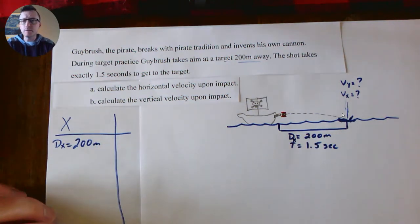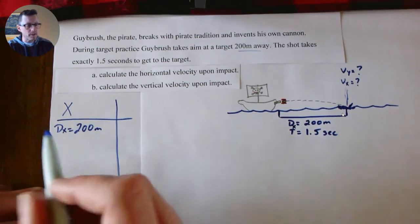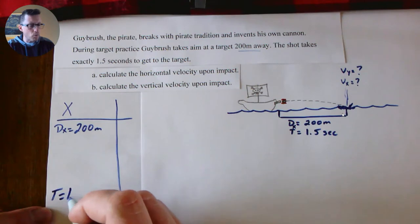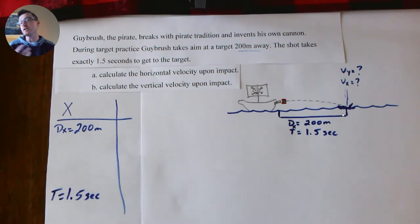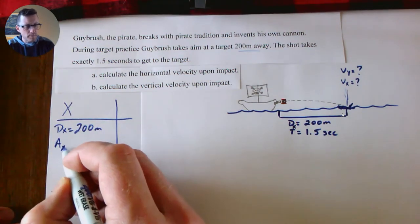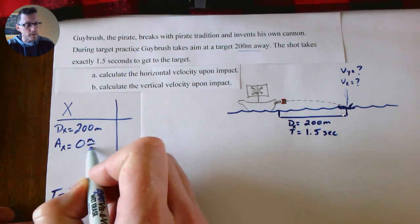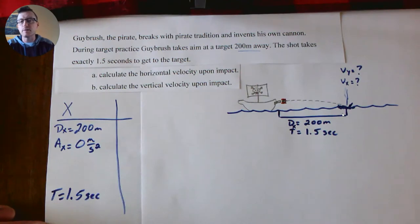So I know for my x numbers here that is a Dx. This question is a little bit different than other questions we've had because we also already know the time—we have a time of 1.5 seconds. So this one's a little bit different because we're not actually having to calculate time first. Question A: calculate the horizontal velocity upon impact. What else do we know about x? We also know the acceleration—it's always going to be zero because we pretend there's no air resistance, so there's nothing to slow it down in the side-to-side direction.